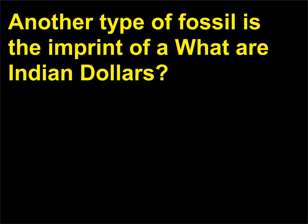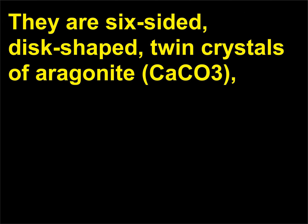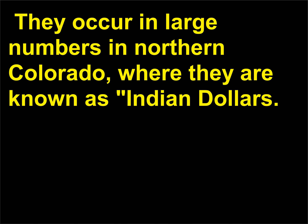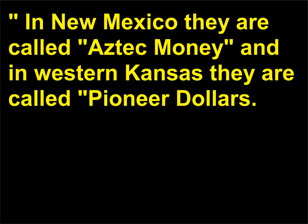What are Indian dollars? They are six-sided, disc-shaped twin crystals of aragonite (CaCO3), which have altered to calcite but retain their outer form. They occur in large numbers in northern Colorado, where they are known as Indian dollars. In New Mexico they are called Aztec money, and in western Kansas they are called pioneer dollars.